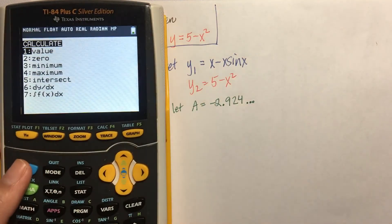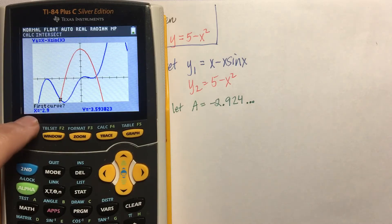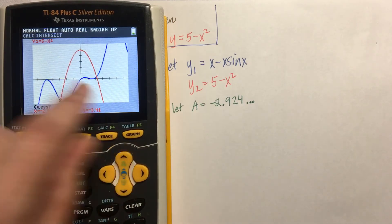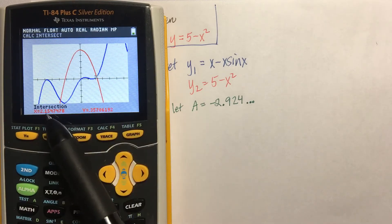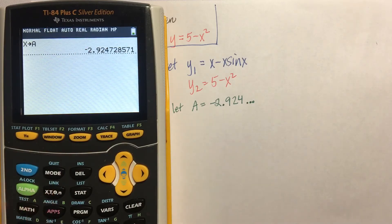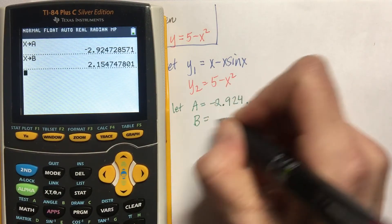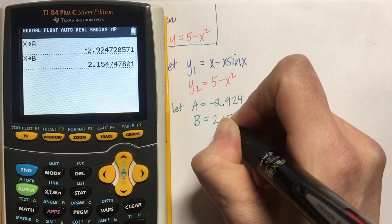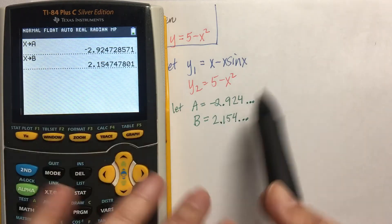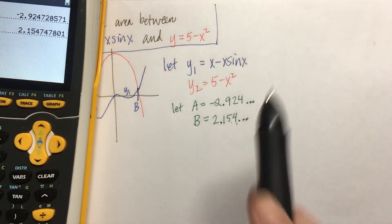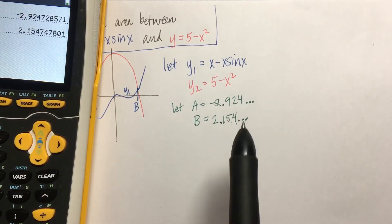And then I'm going to find my second one. Second trace again, intersect, first curve I'm on Y1 so I hit enter, second curve I'm on Y2 so I hit enter. For my guess, since I want the one on the right, I'm going to type a two because it'll take me close to it. It takes me to 2.154. I'm going to quit out, go to my home screen, go X, store, and call it B. I'm going to write it on my paper. Let B equal 2.154 dot dot dot. Notice I'm not rounding anything, just writing the first three decimal places. Always go three decimal places. The dot dot dot implies it keeps going. But this is the cool thing. By having all of this defined, I don't have to write them ever again.